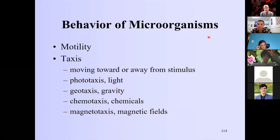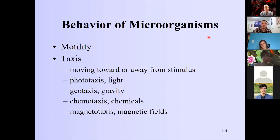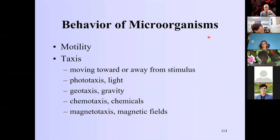Things producing oxygen are photosynthetic, so you don't want to be where there's light because there's going to be oxygen there. Regarding geotaxis, cyanobacteria can move towards nutrients by collapsing their gas vacuoles, which causes them to sink — that would be positive geotaxis. Building up gas vacuoles results in negative geotaxis, moving up towards the surface. Anything that wants to stay on the bottom would move towards the bottom.